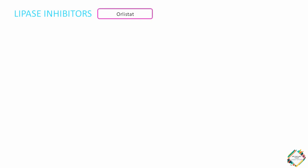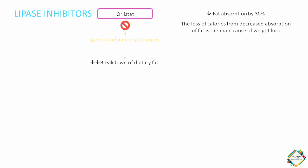What is the mechanism of action? Orlistat is a pentanoic acid ester that inhibits gastric and pancreatic lipases, thus decreasing the breakdown of dietary fat into smaller molecules that can be absorbed. Administration of orlistat decreases fat absorption by about 30%. The loss of calories from decreased absorption of fat is the main reason for weight loss. The adverse gastrointestinal effects associated with the drug may also lead to an overall decreased intake of food.